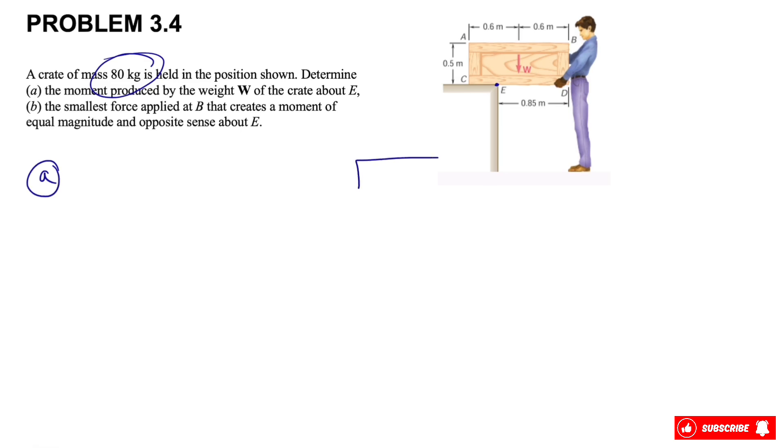For part A of the question, we have the weight of the crate. We're going to start with the free body diagram. It's the weight W here, and we need to find the moment about E. For this part, first of all we need to find the weight, which is mass times acceleration of gravity. We know the mass is 80 kilograms from the question and we have 9.81 meters per square second for g, so if we calculate this we'll get 784.8 newtons for the weight.